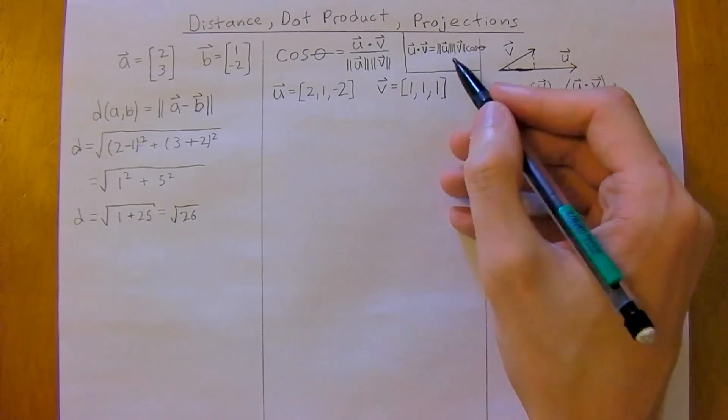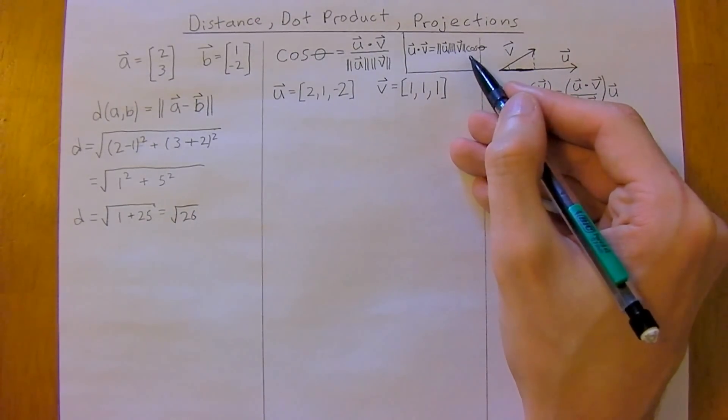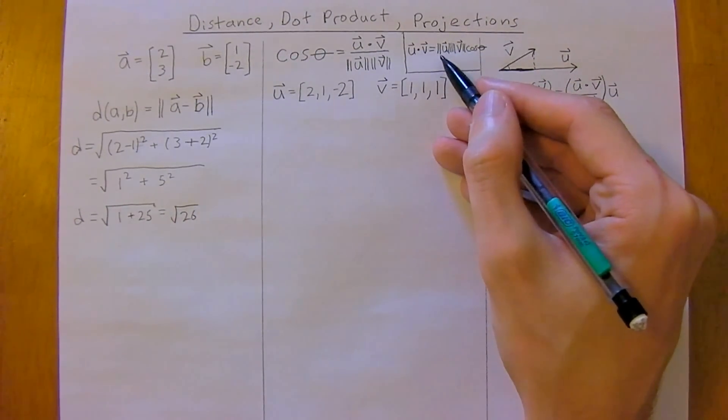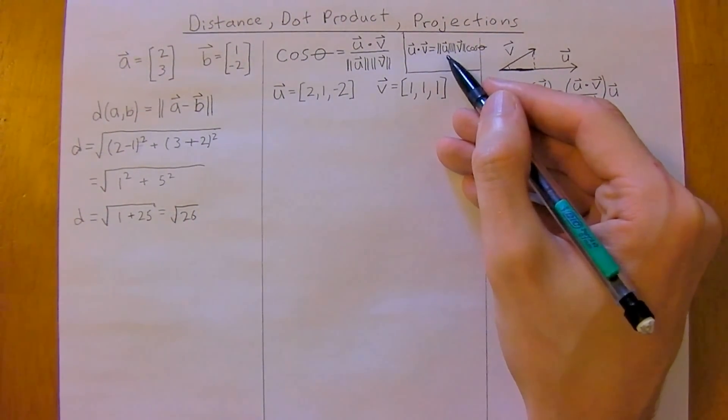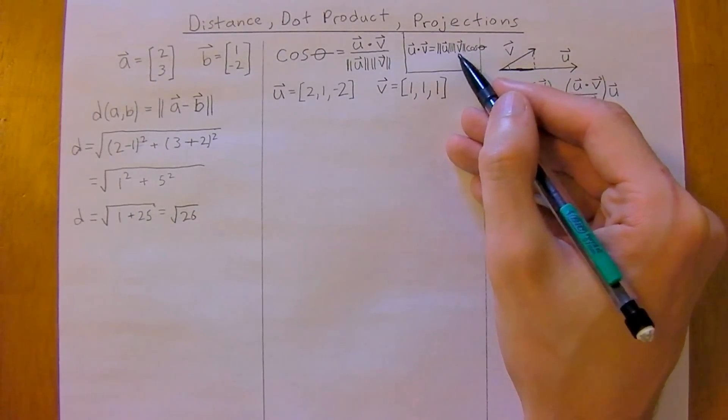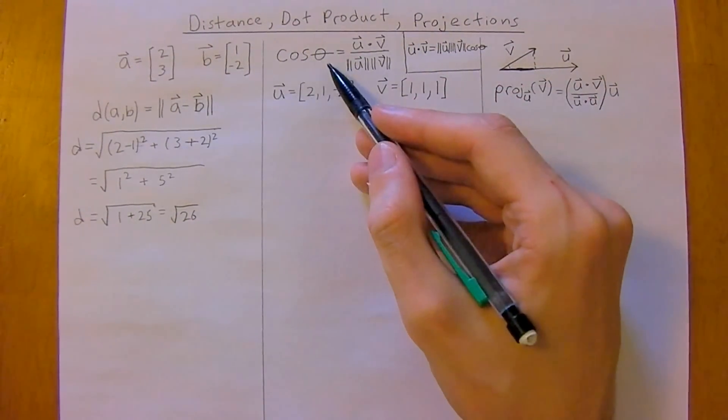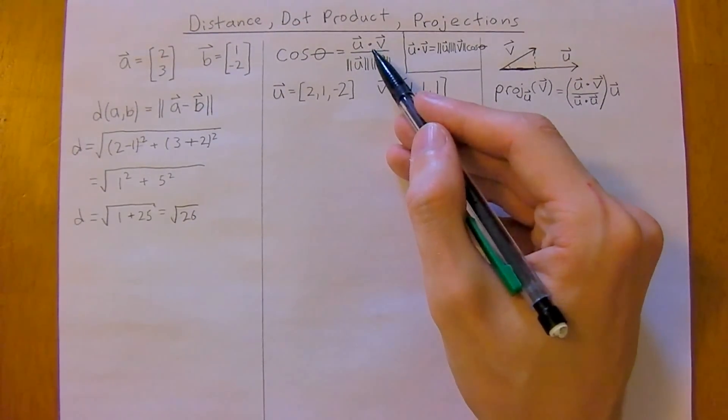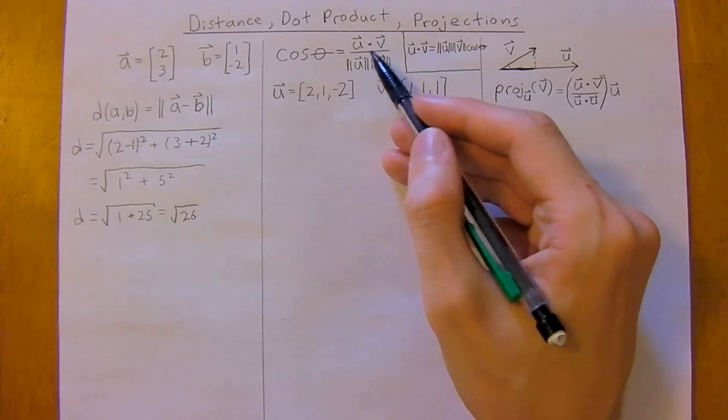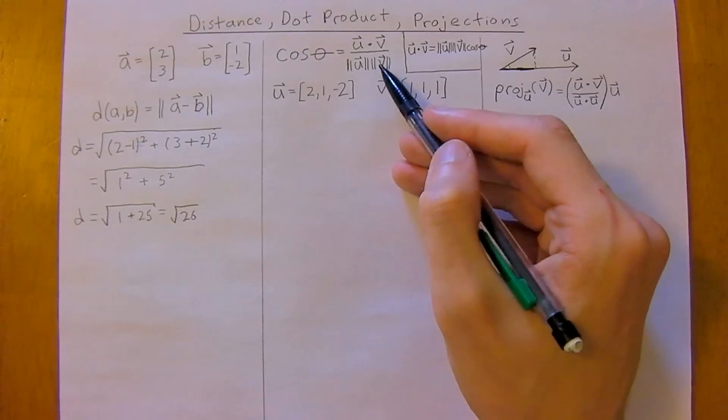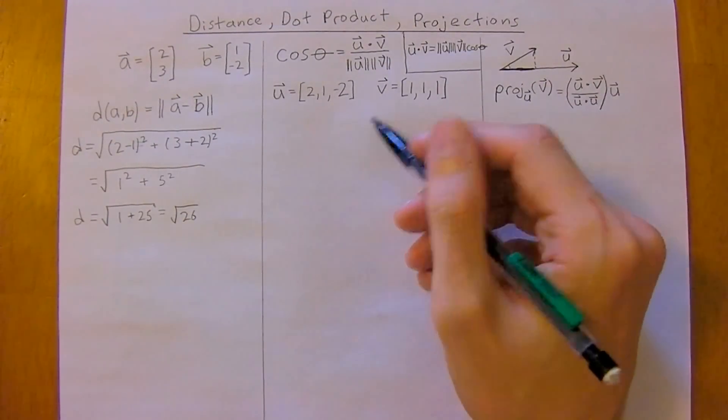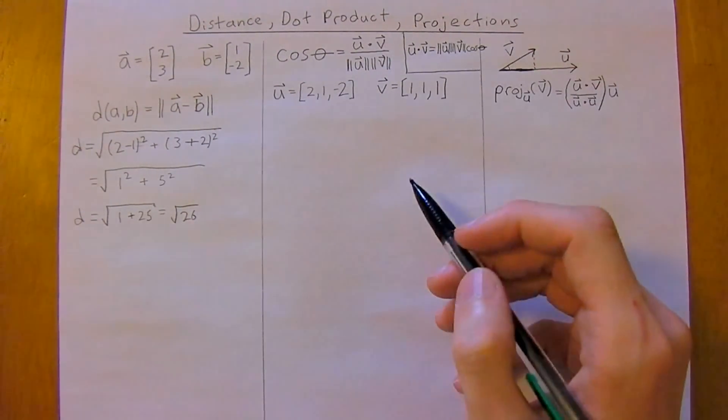so if you just take both sides of the equation and divide off the magnitude of U times the magnitude of V, you'll be left with cosine theta equals vector U dot product vector V divided by the magnitude of U times the magnitude of V. So we'll run through this little example here.